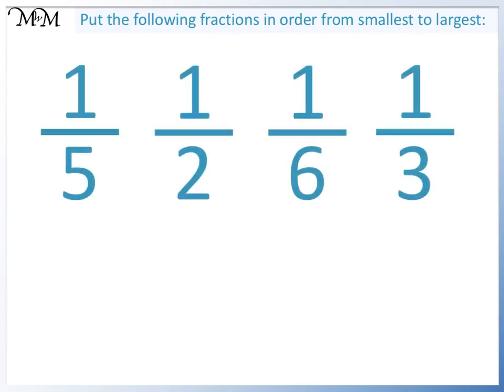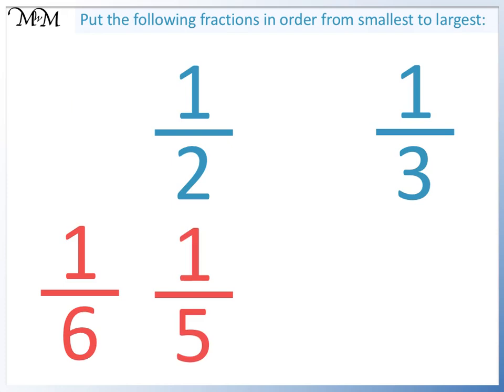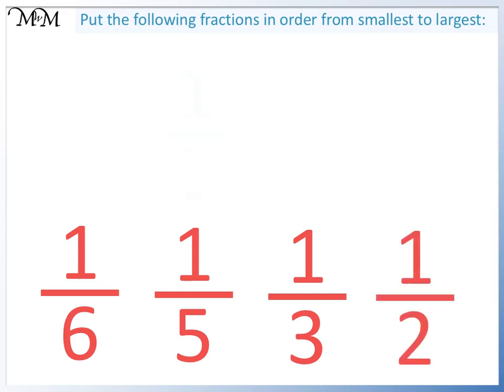We will put the following fractions in order from smallest to largest. We write the smallest fraction first. Since they all have a numerator on top of one, the smallest fraction will have the biggest denominator on the bottom. Six is the largest denominator, so one sixth is the smallest fraction. The next biggest denominator is five, so one fifth is the next smallest. Then we have one third and one half. These fractions are arranged from smallest to largest.